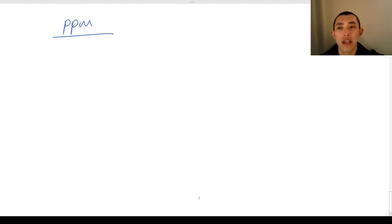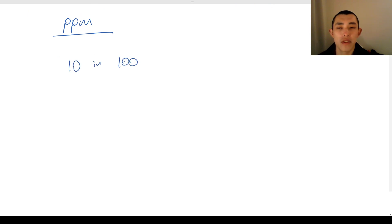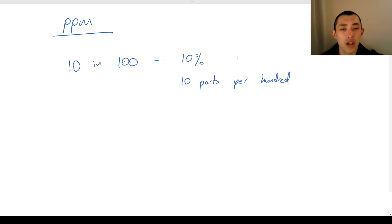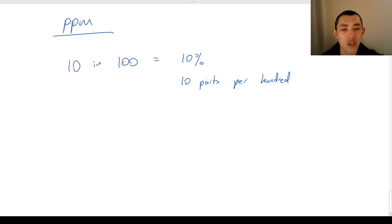The way I like to think about parts per million is a bit like a percentage. So when we say 10 in 100 people have a disease, we might say 10% of people have that disease. Another way to express this is 10 parts per hundred. You can literally replace the percentage sign with the words 'parts per hundred.' There are 10 parts per 100 — for example, 10 cogs out of 100 cogs are broken: 10%, 10 parts per hundred.